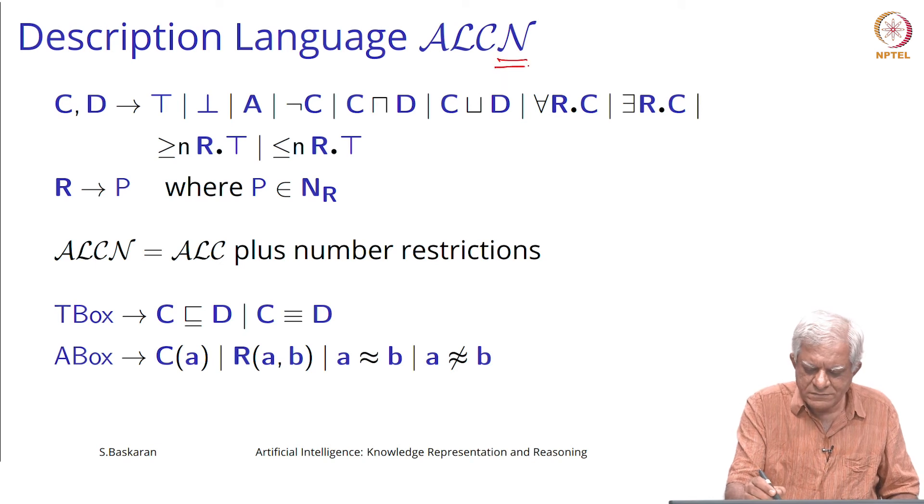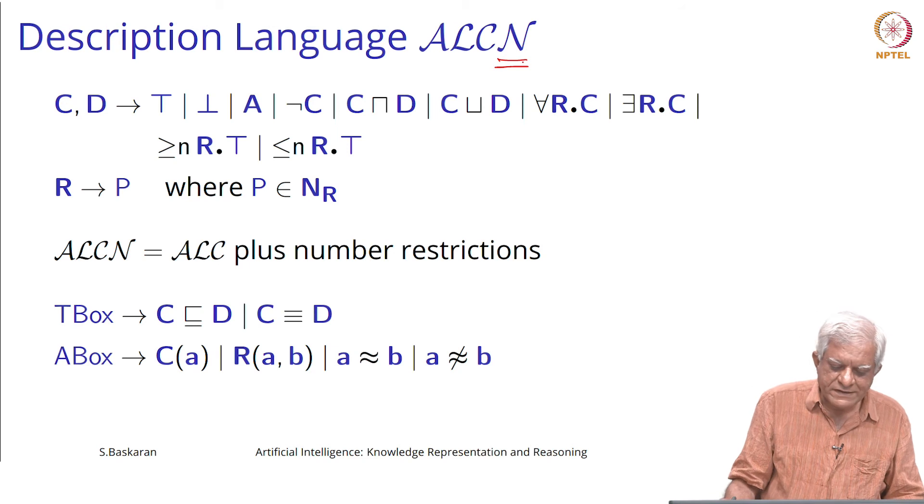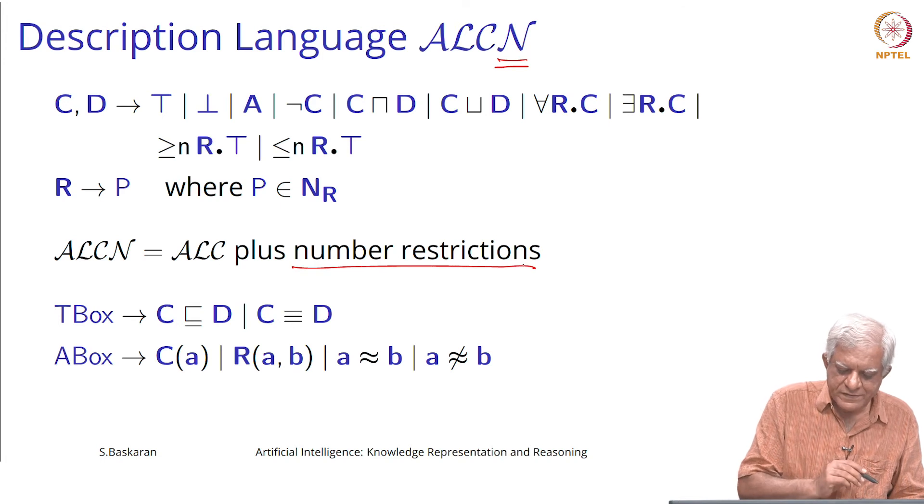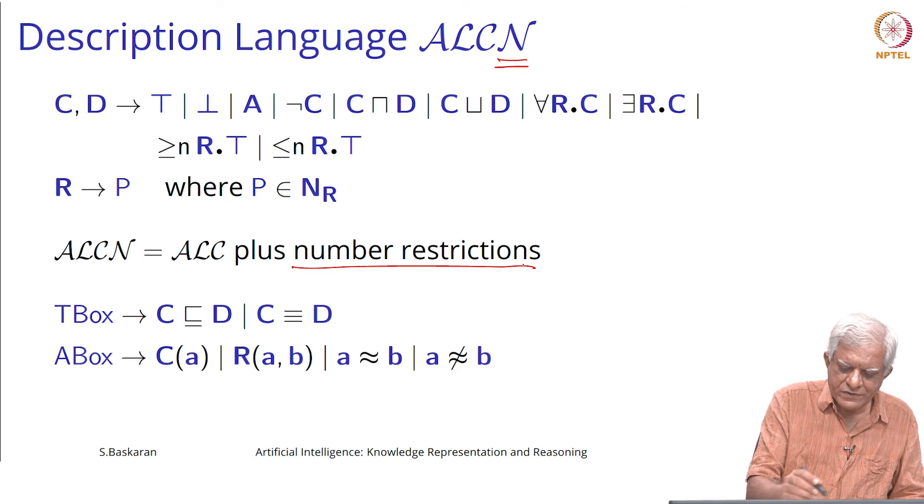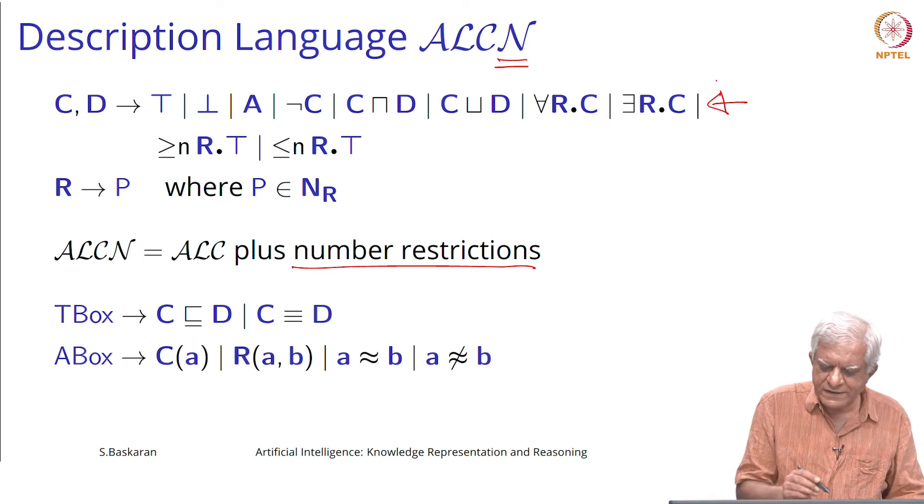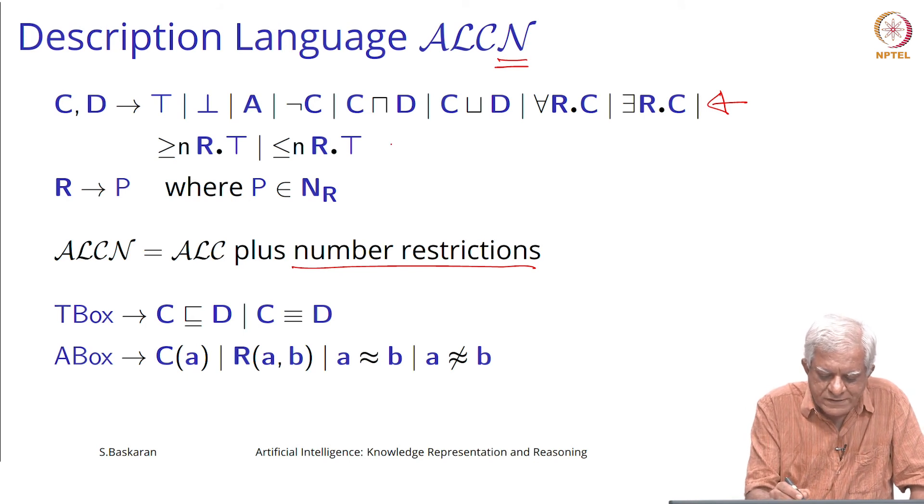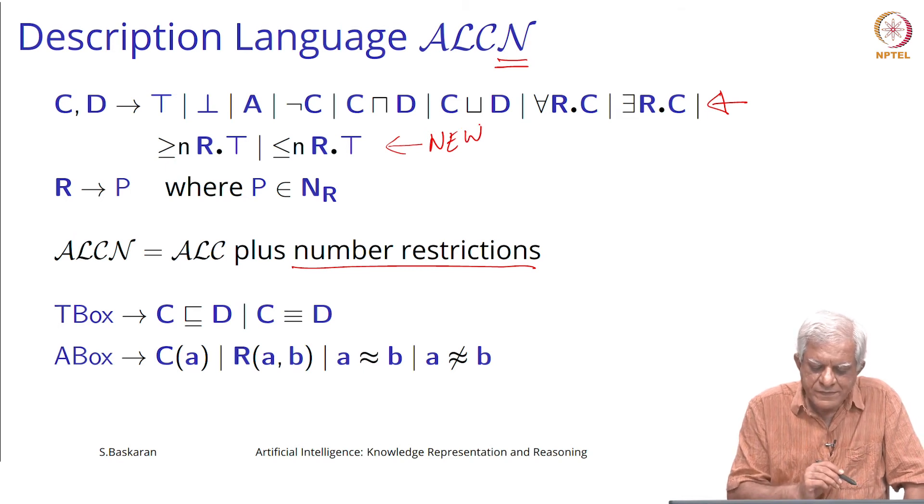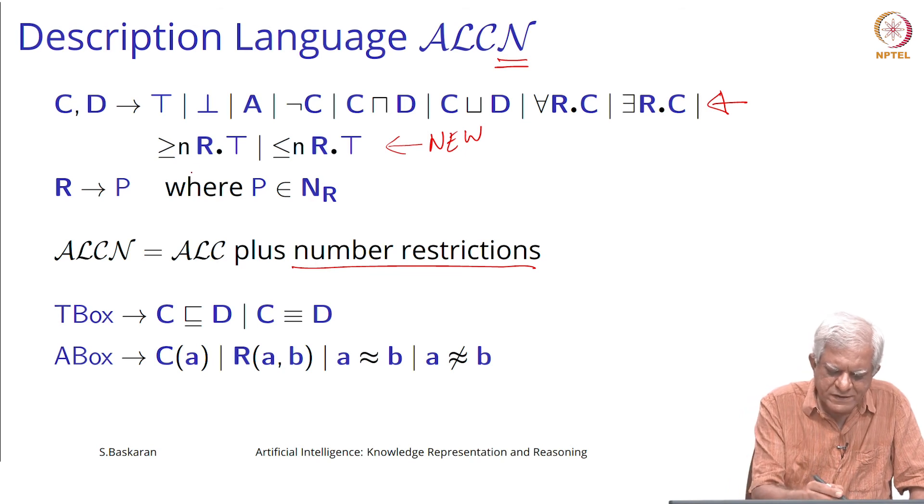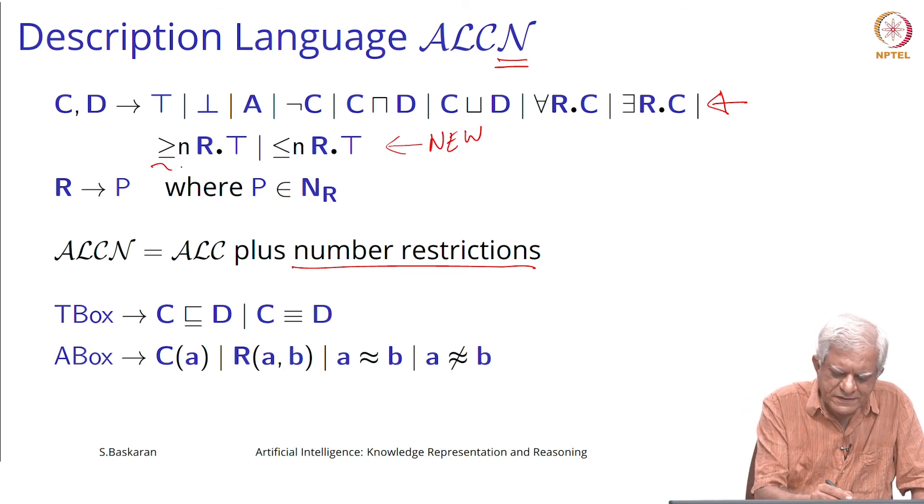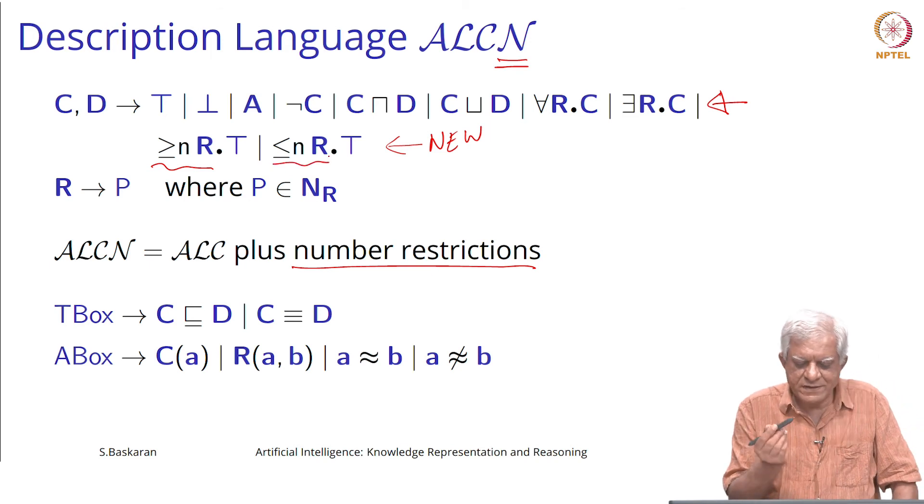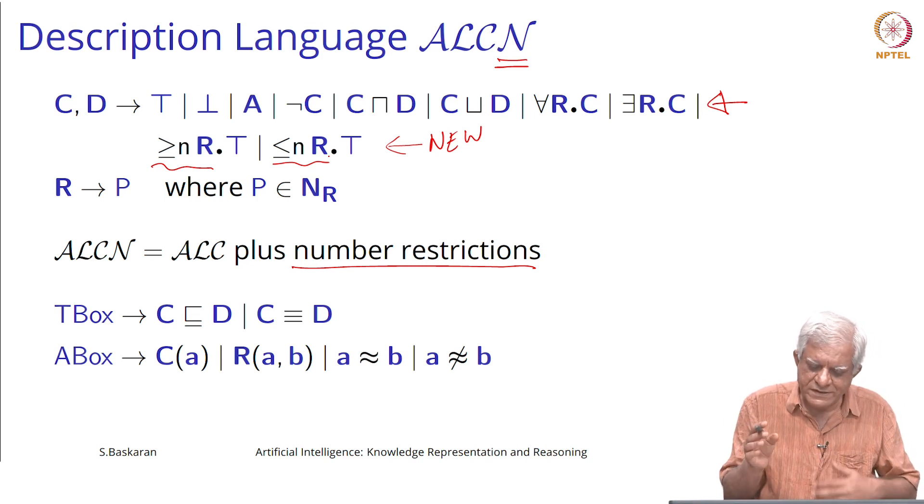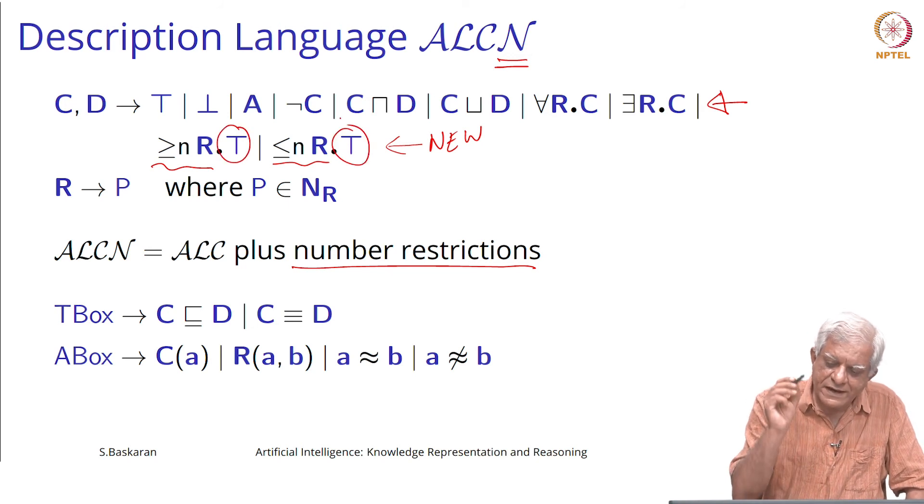Then we add the symbol N which stands for number, number restrictions. Here the top line as you can see is basically ALC. What we have, two new things here, are that we can add number restrictions to that. We have seen that already, that this is the min cardinality and the other one is the max cardinality, at most and at least N role fillers or at most N role fillers.